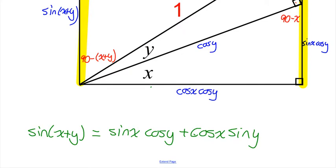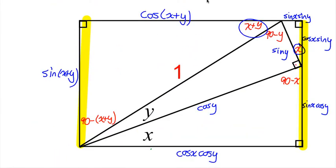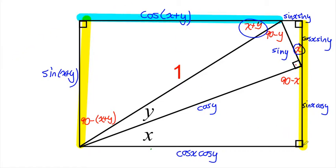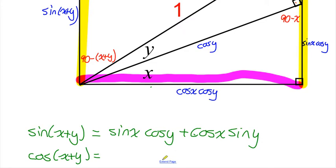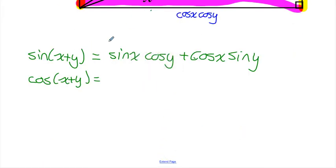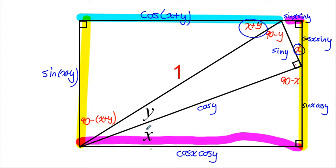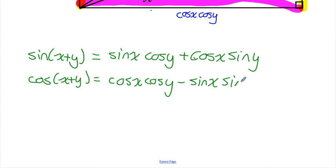Now let's use the other two sides of the rectangle to create the identity for cos of x plus y. Cos of x plus y is this length here. Notice that length is the difference between the whole side and that little piece there. So cos of x plus y equals cos x cos y minus that little piece, which is sin x sin y. So our identity is: cos of x plus y equals cos x cos y minus sin x sin y.